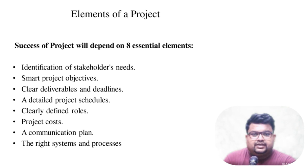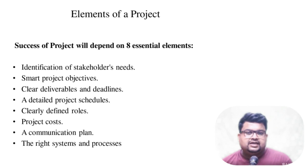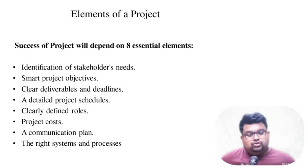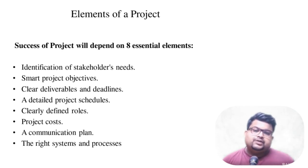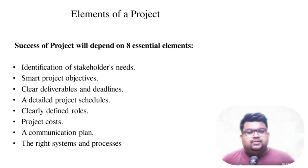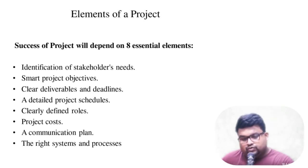Now, every project has certain elements. If you want to make a project successful, there are 8 things to keep in mind. First is identification of stakeholders' needs — what the stakeholder needs must be known to us. Second is smart project objectives — you must know why your project needs to be completed. After that, the deliverable: what work will it do, by when, what is the deadline. Every project has a schedule — that schedule should be ready, detailed — and because of that schedule, you will know which tasks need to be completed.